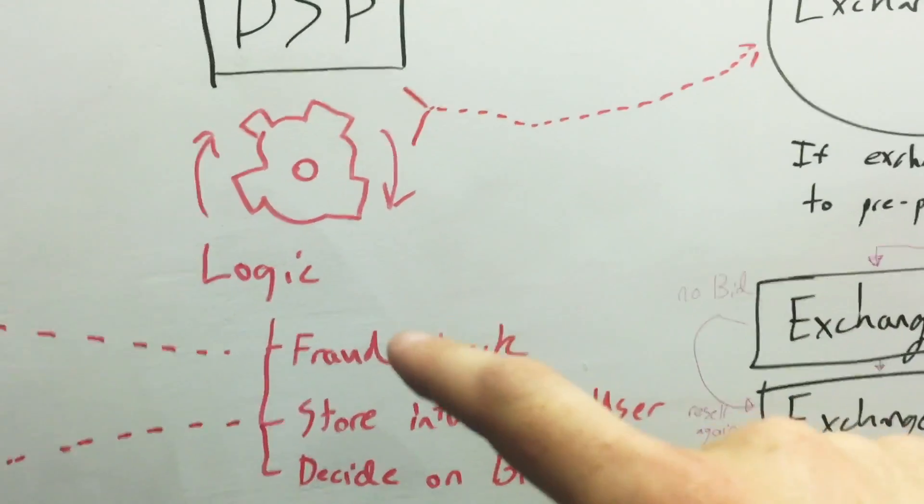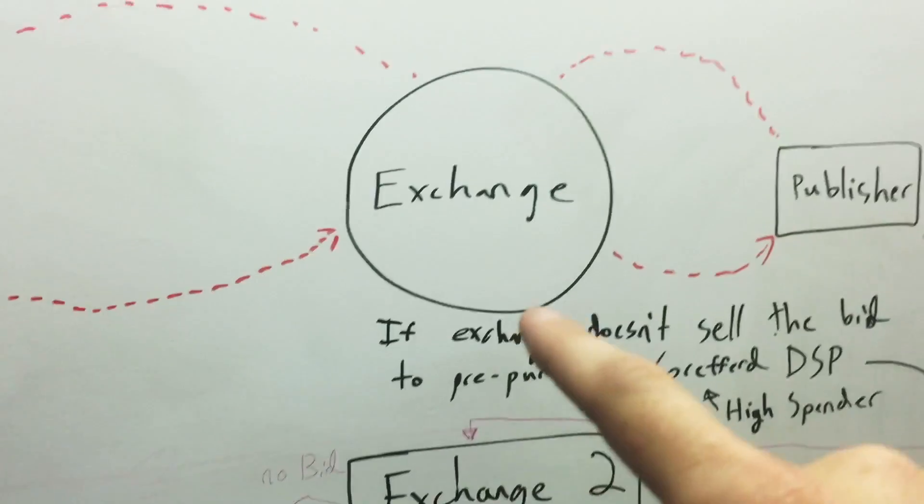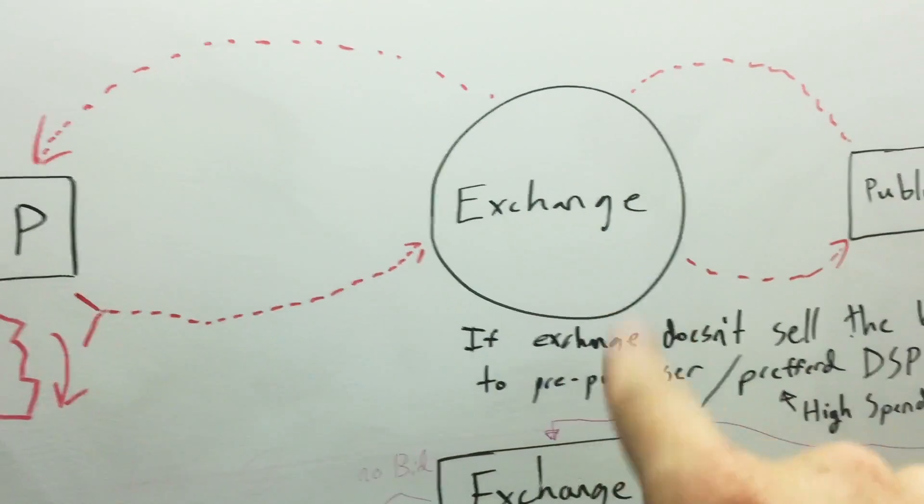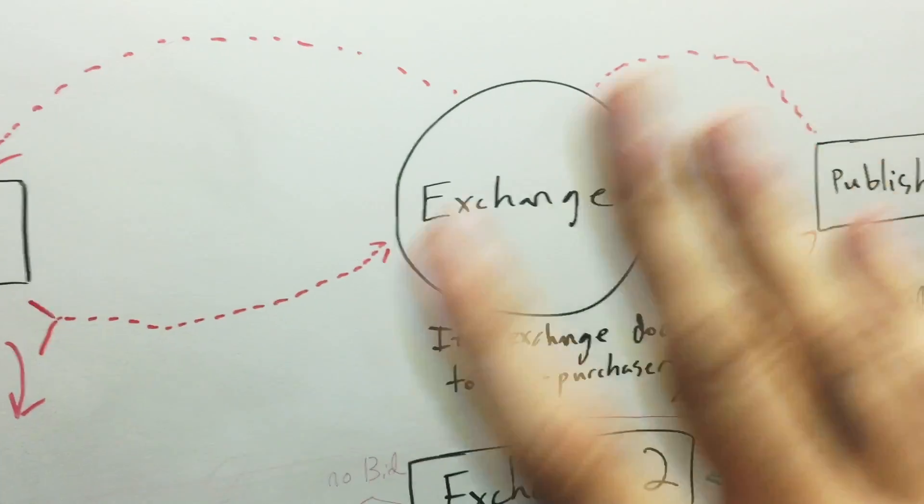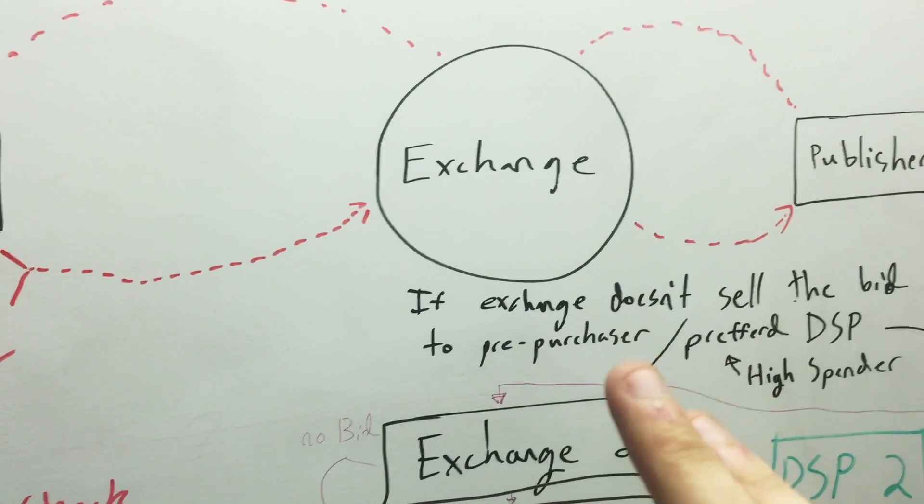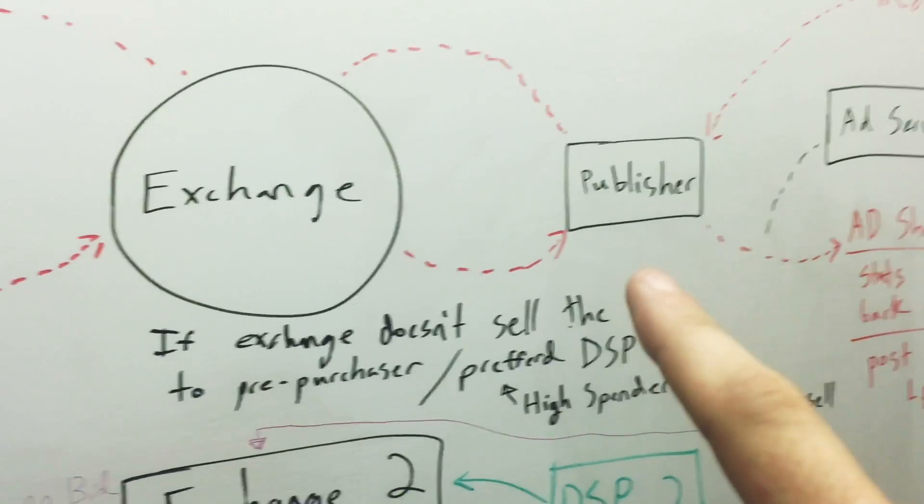Let's go back up here. Let's say we decide on the bid price, we do our logic, and then we ping the exchange with our price. Let's say other DSPs also ping the exchange with the price, and for some reason none of us won because it just didn't meet the publisher's minimum for that slot.